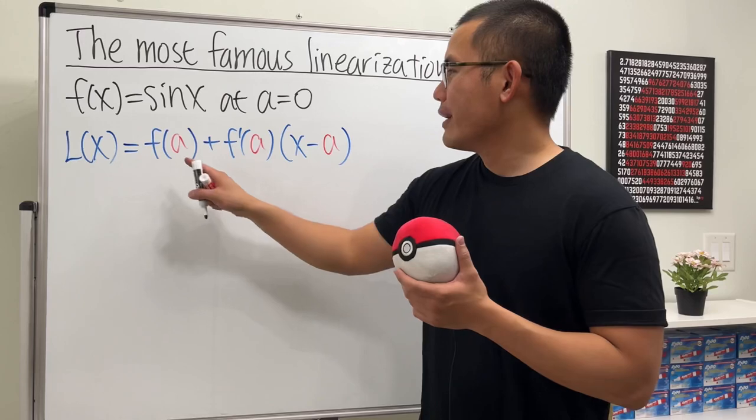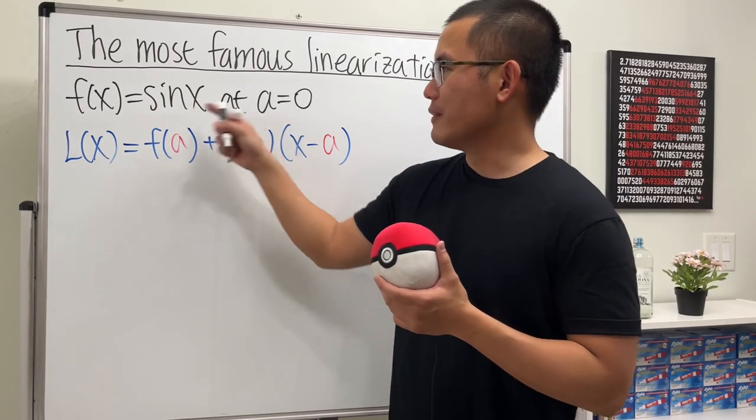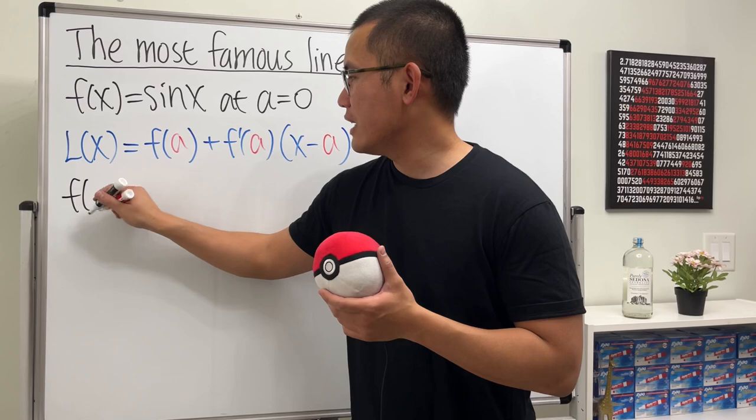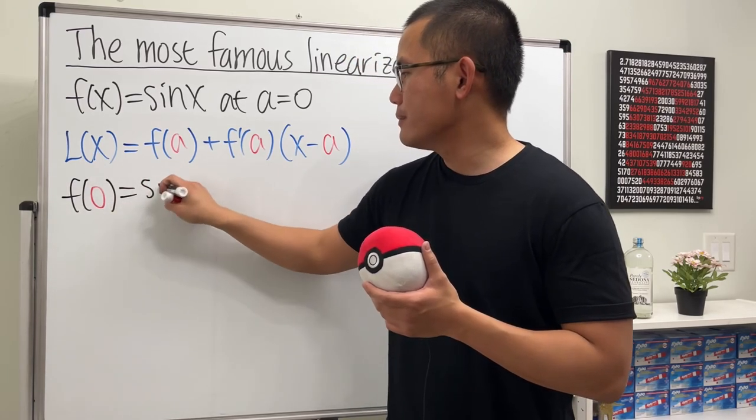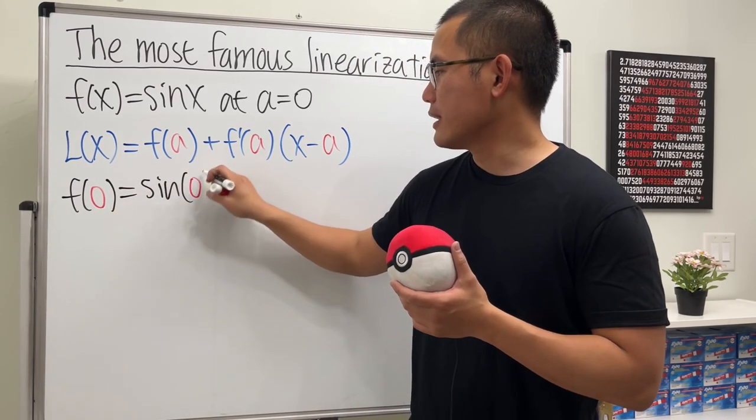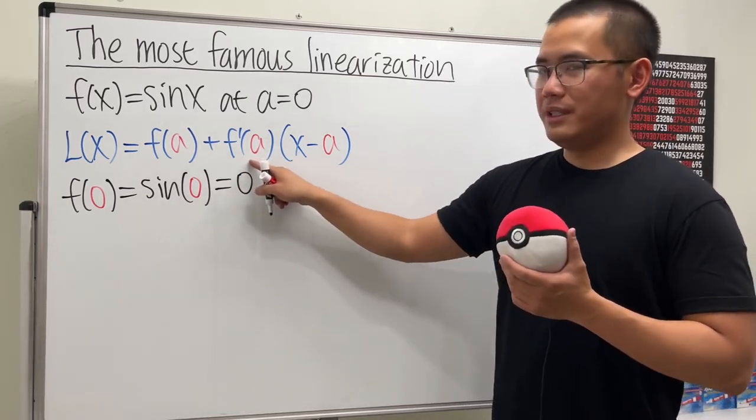Let's go ahead and get f(a) first, which is going to be f(0). So we will just have sine zero, and sine zero is just nicely equal to zero, and we are done.